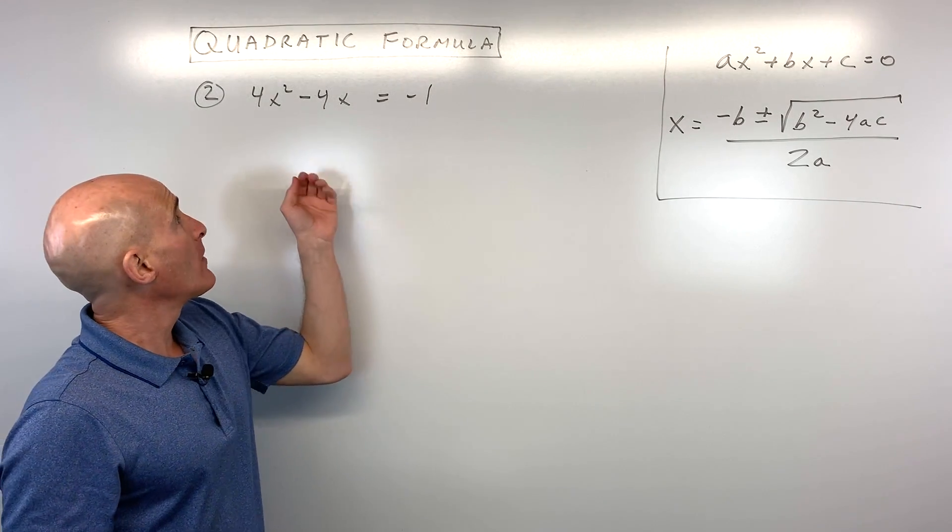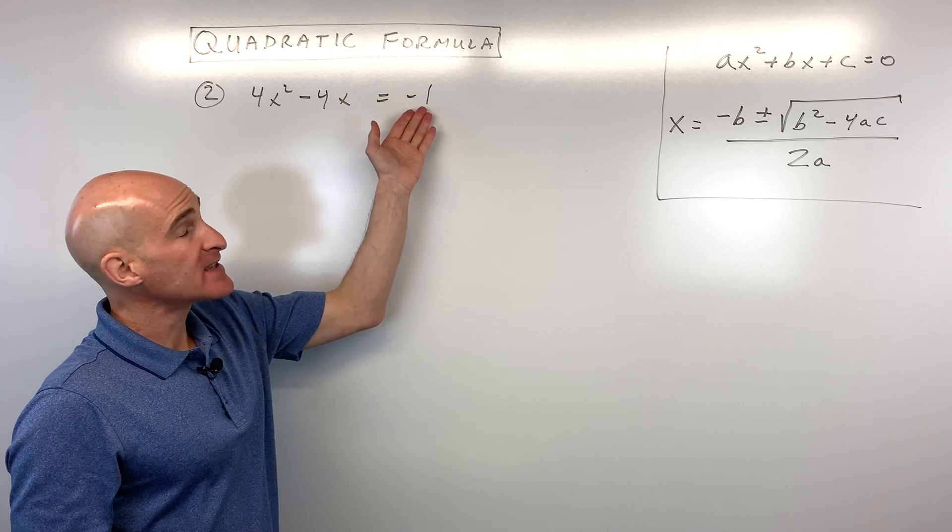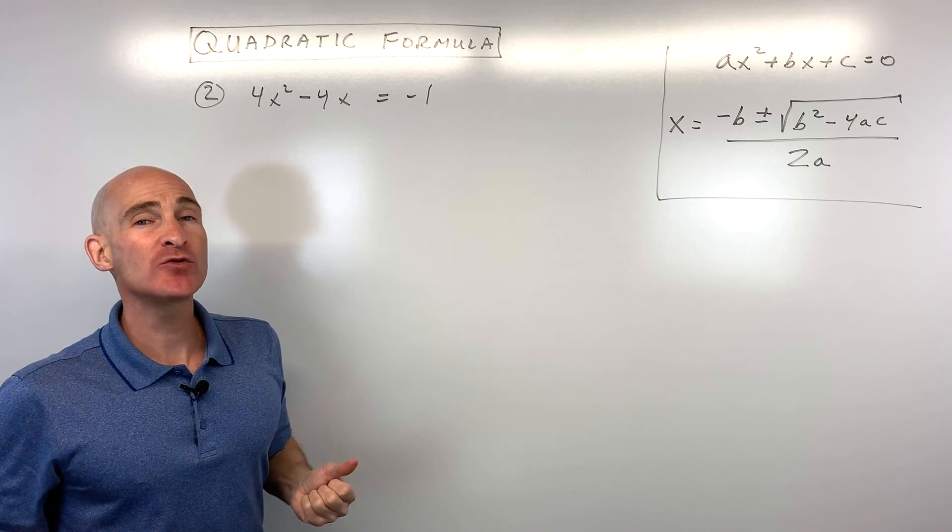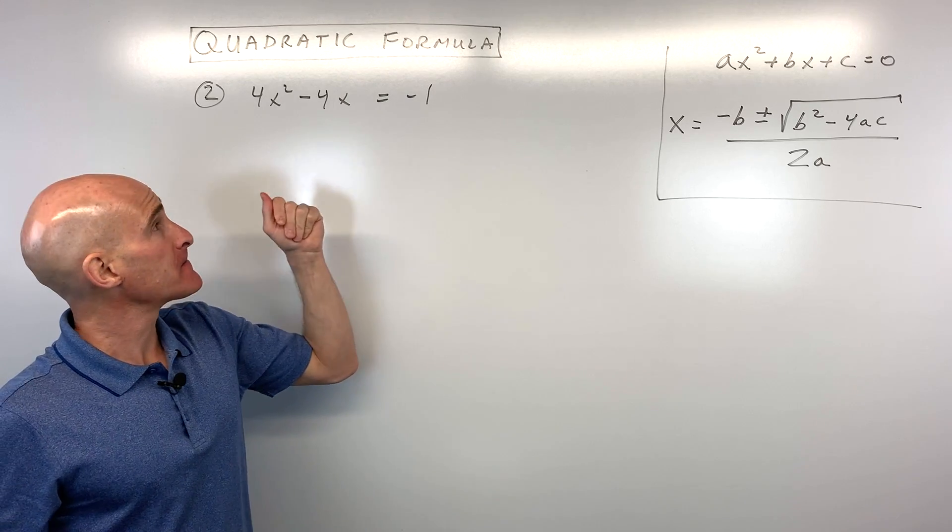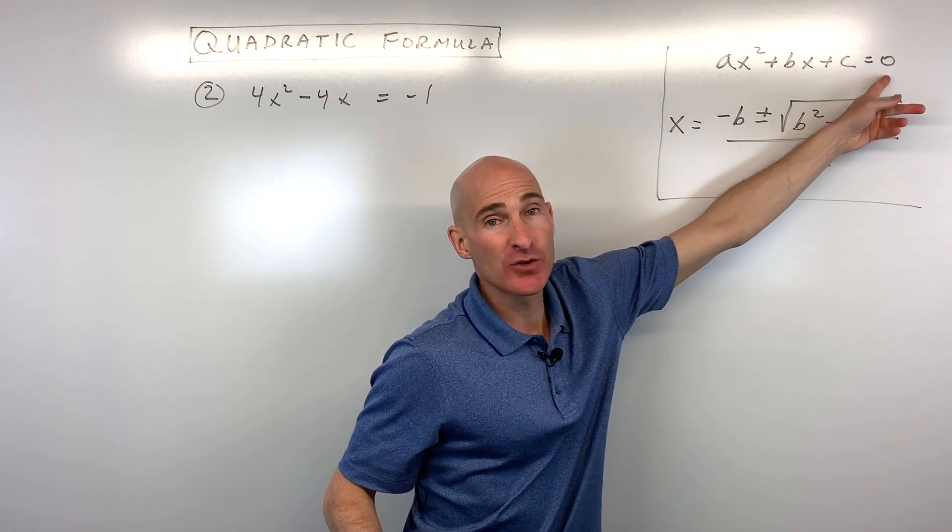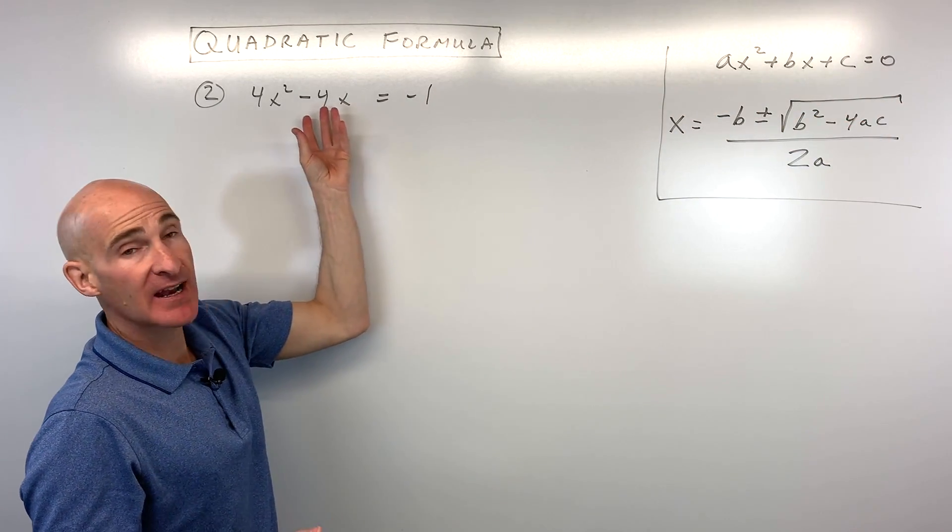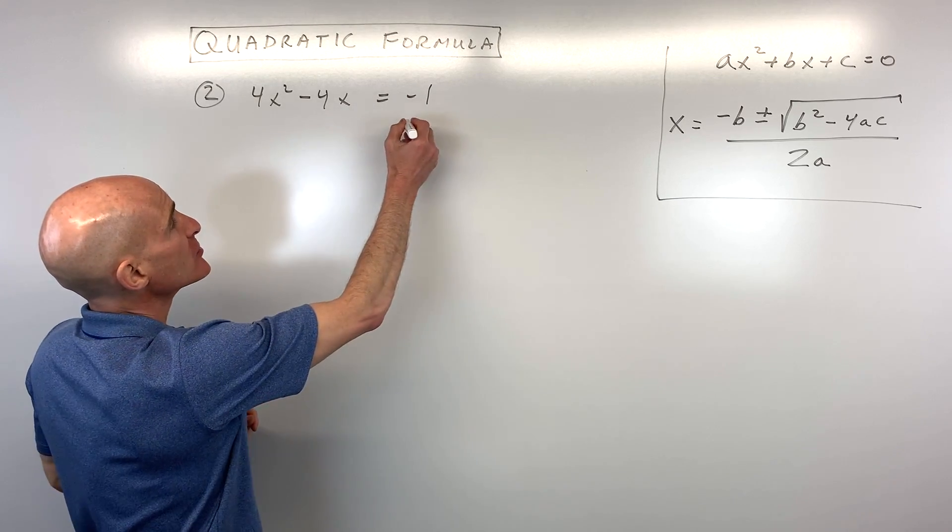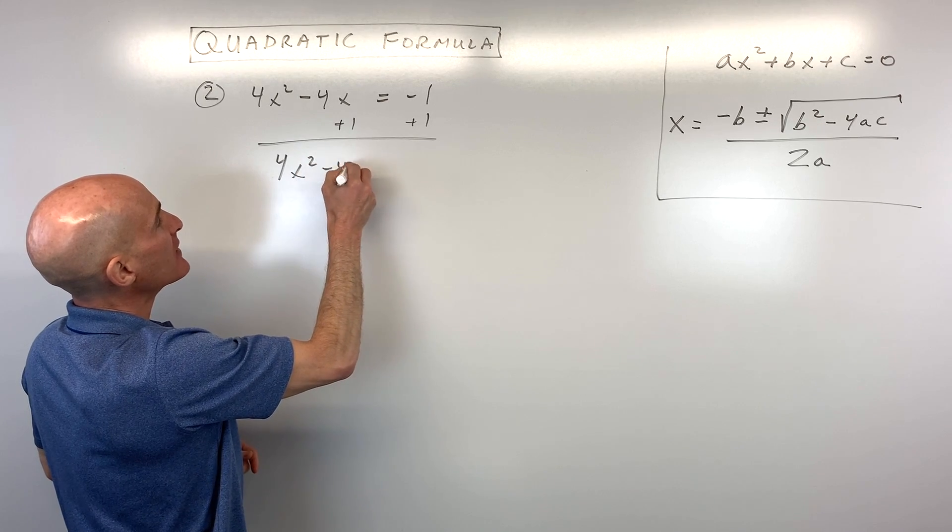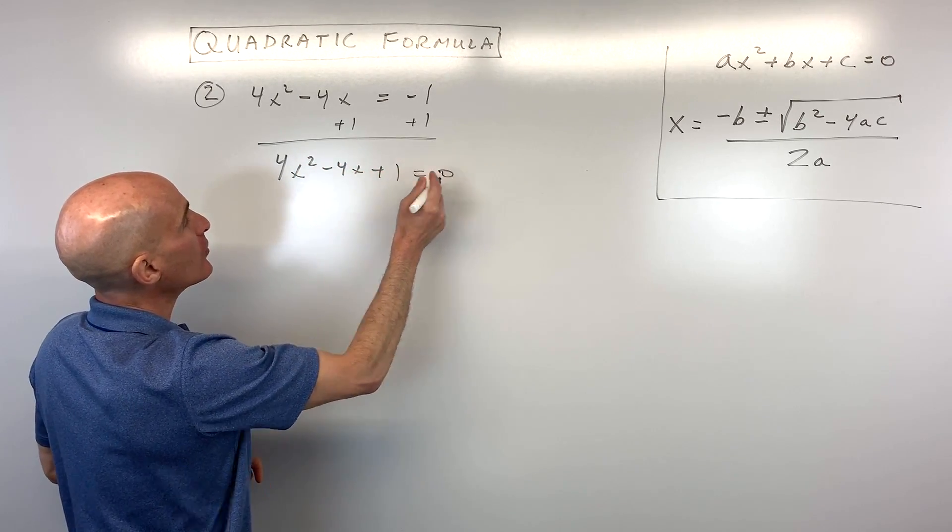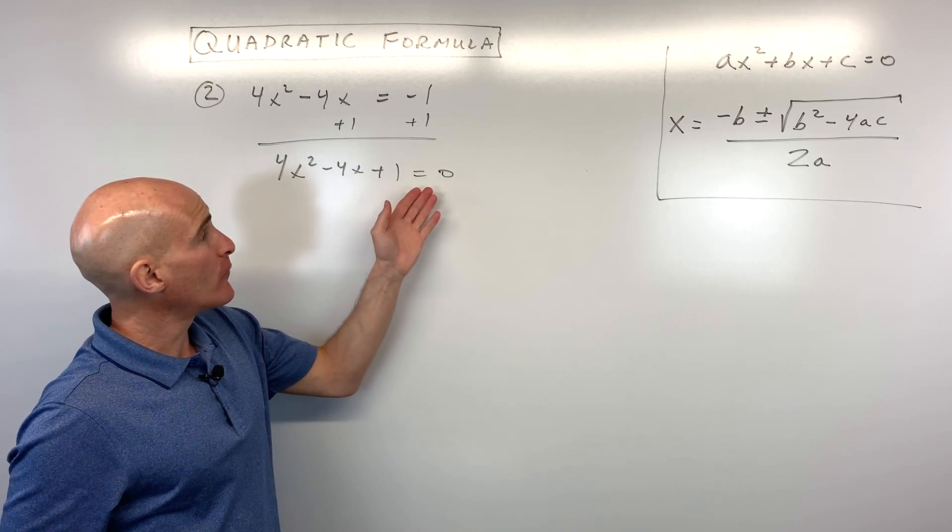For number 2 now, we've got 4x squared minus 4x equals negative 1. How would we solve this one by using the quadratic formula? Well, the first thing you might notice is this doesn't equal 0. So what we want to do is we want to get everything on one side of the equation and set it equal to 0. So to do that, I'm just going to add 1 to both sides. So that gives us 4x squared minus 4x plus 1 equals 0. Now it's in that standard form.